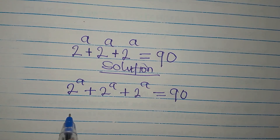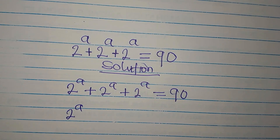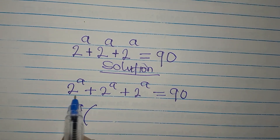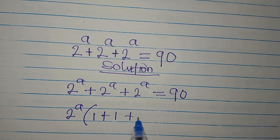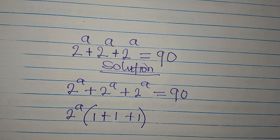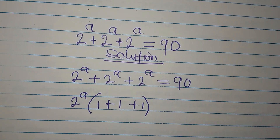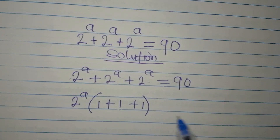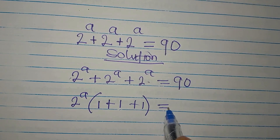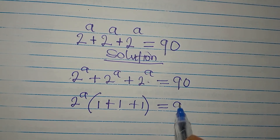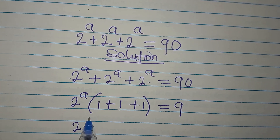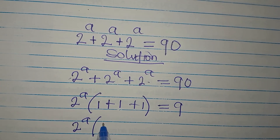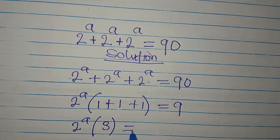We factor out 2 to the power of a from all three terms, so we have 2^a multiplied by (1 plus 1 plus 1). If you expand this bracket, you get 2^a times 3, and this is equal to 90.